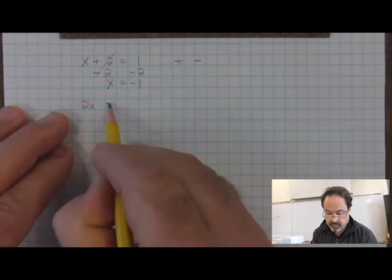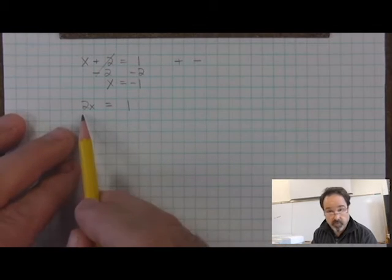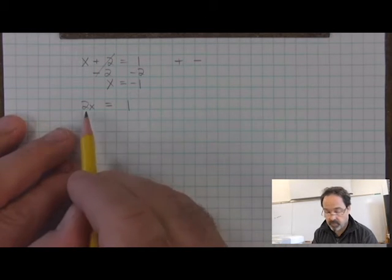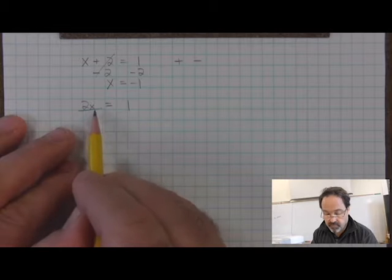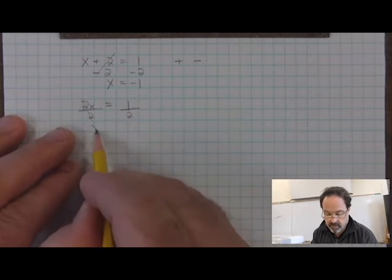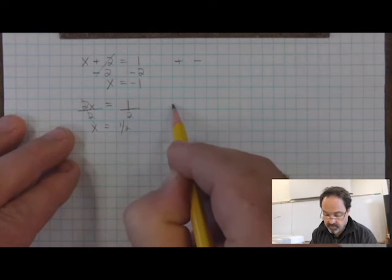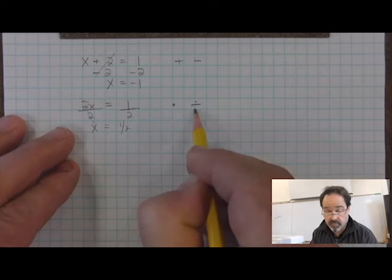Another example of inverse operations: 2x is equal to 1. We have multiplication here, and we know that the inverse of multiplication is division. So if we divide both sides by the same amount, it cancels out, leaving x. Multiplication and division are inverses of each other.